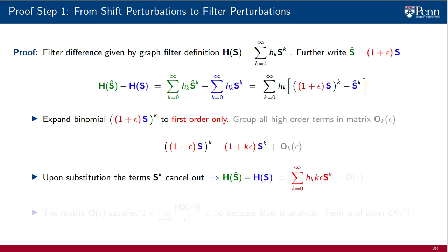Upon substitution of this expanded binomial into the expression we derived for the filter difference, the terms plus and minus S to the power of k cancel out. We are left with a simple expression where summons in the series are of the form h times k times ε times S to the power of k. High order terms are grouped in the matrix O. This matrix is of order 2 because the filters are analytic.